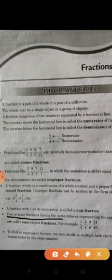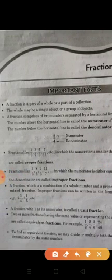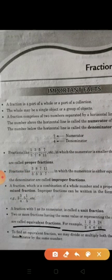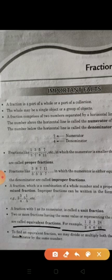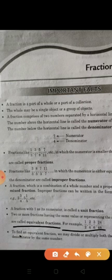Two or more fractions having the same value, or representing the same part of a whole, are called equivalent fractions. For example, 1 upon 2, 2 upon 4, 3 upon 6, 24 upon 48 — if two or more fractions have the same value after simplification, they are equivalent fractions. For instance, 1 upon 2 and 2 upon 4 — cancelling 4 by 2 also gives 1 upon 2.